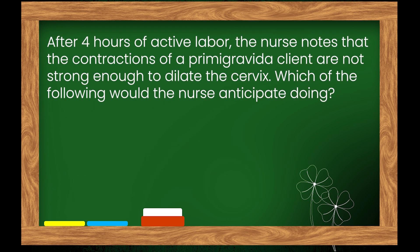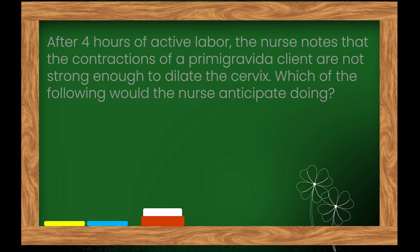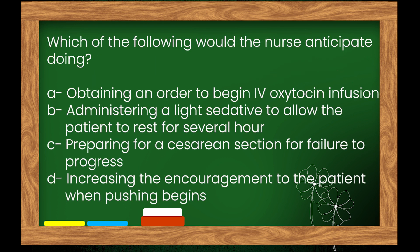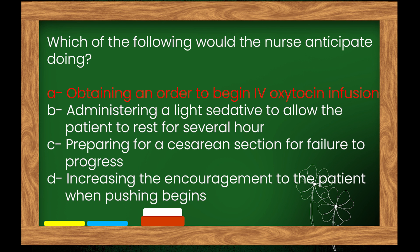Question 15: After four hours of active labor, the nurse notes that the contractions of a primigravida client are not strong enough to dilate the cervix. Which of the following would the nurse anticipate doing? Options: A. Obtaining an order to begin IV oxytocin infusion, B. Administering a light sedative to allow the patient to rest, C. Preparing for a cesarean section for failure to progress, D. Increasing encouragement to the patient when pushing begins. The right answer is option A: obtaining an order to begin IV oxytocin infusion.